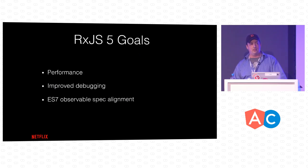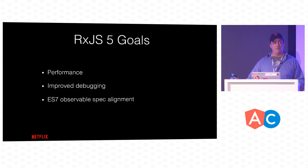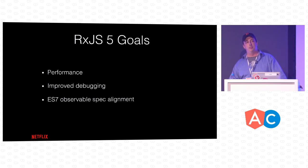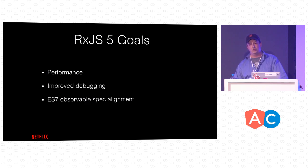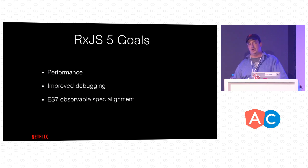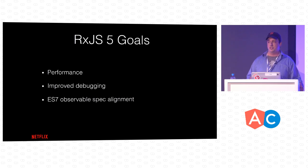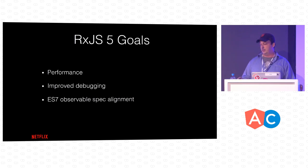RxJS 5 was rewritten from the ground up primarily for performance — that's the primary goal. The secondary goal is improved debugging, and the third goal was to match the ES7 observable spec. Some of you will notice that methods like onNext have become just next, and onCompleted has just become completed, getting it in line with future JavaScript standards.